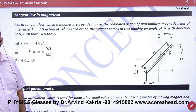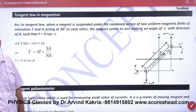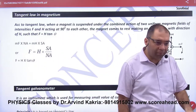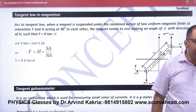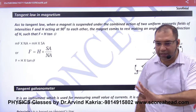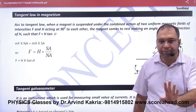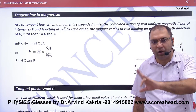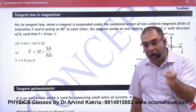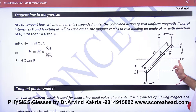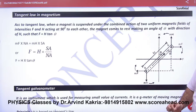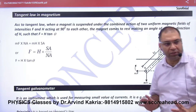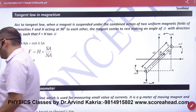The rule is: if you have a bar magnet with two fields at 90 degrees to each other, and the bar magnet makes angle theta with the horizontal field H, then the applied field F is always equal to H into tan theta. This is the Tangent Law in Magnetism.